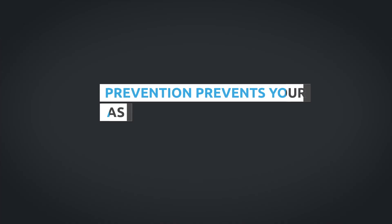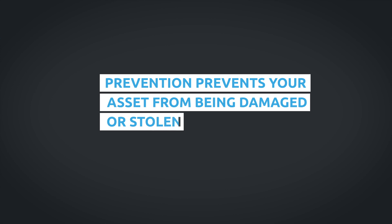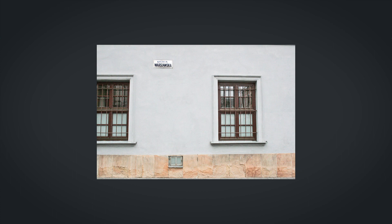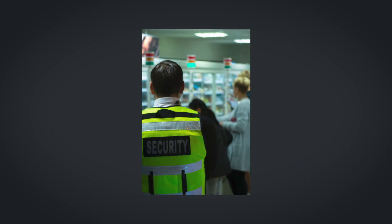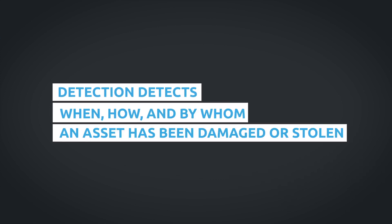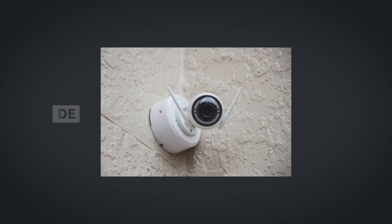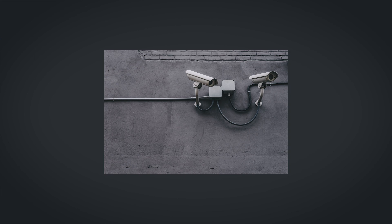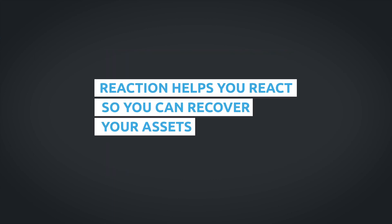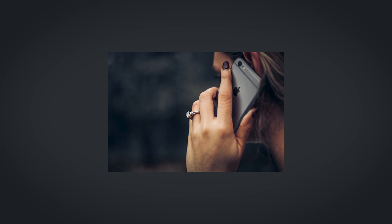Prevention prevents your asset from being damaged or stolen by installing locks at doors, window bars, securing the walls around the property, or potentially hiring a security guard. Detection detects when, how, and by whom an asset has been damaged or stolen by installing burglar alarms or security cameras. And reaction helps you react so you can recover your assets by calling the police, making an insurance claim, or replacing the stolen items.